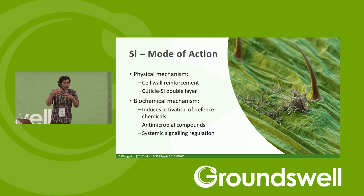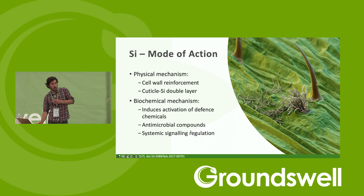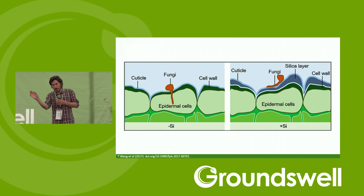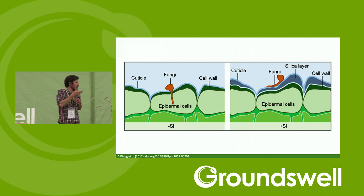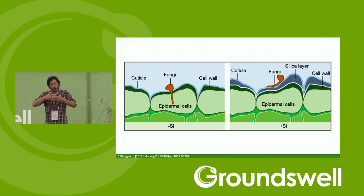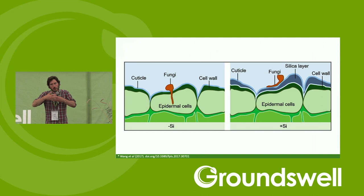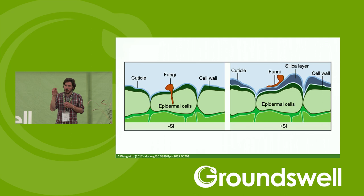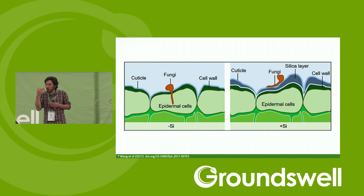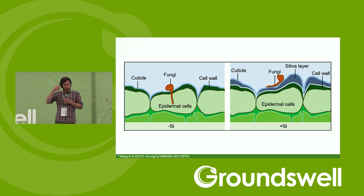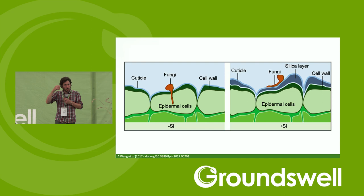Silicon contributes to pest and disease resistance through cell wall reinforcement alongside calcium and boron, through signaling, and through production of specific antimicrobial compounds. When we reinforce the cells and make the skin of the plant thicker and more tightly bound, it makes it harder for fungal hyphae to penetrate through — they don't have the strength to get through those reinforced cell walls. There are also scanning electron micrograph photos showing that the mandibles of insects are more worn down when chewing on silicon-rich plants.